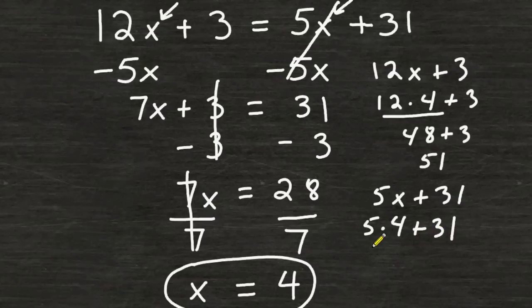And 5 times 4 is 20. And 20 plus 31 is also equal to 51. You can see that after plugging the value of 4 into both sides of our equation, that we come up with a value of 51. Which means that we must have done the problem correctly.